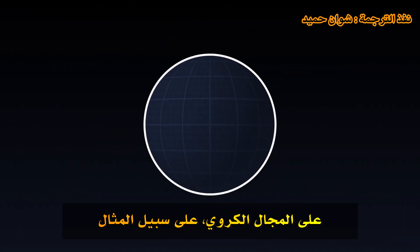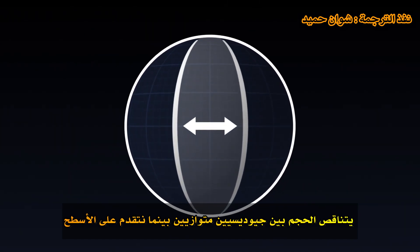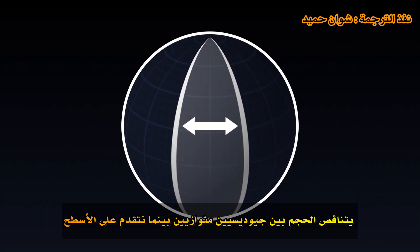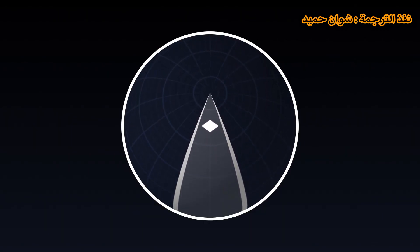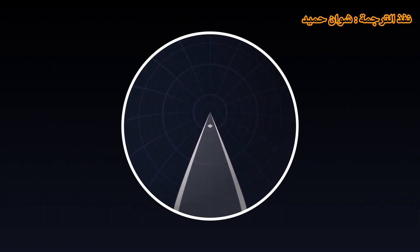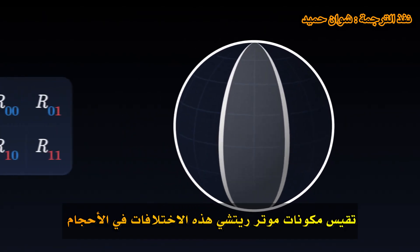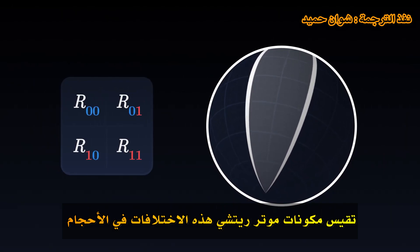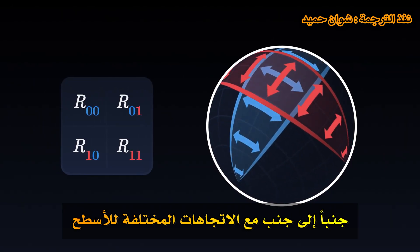On a sphere, for example, the volume between two parallel geodesics decreases as we progress on the surface. The components of the Ricci tensor measure these variations of volumes along the different directions of the surface.